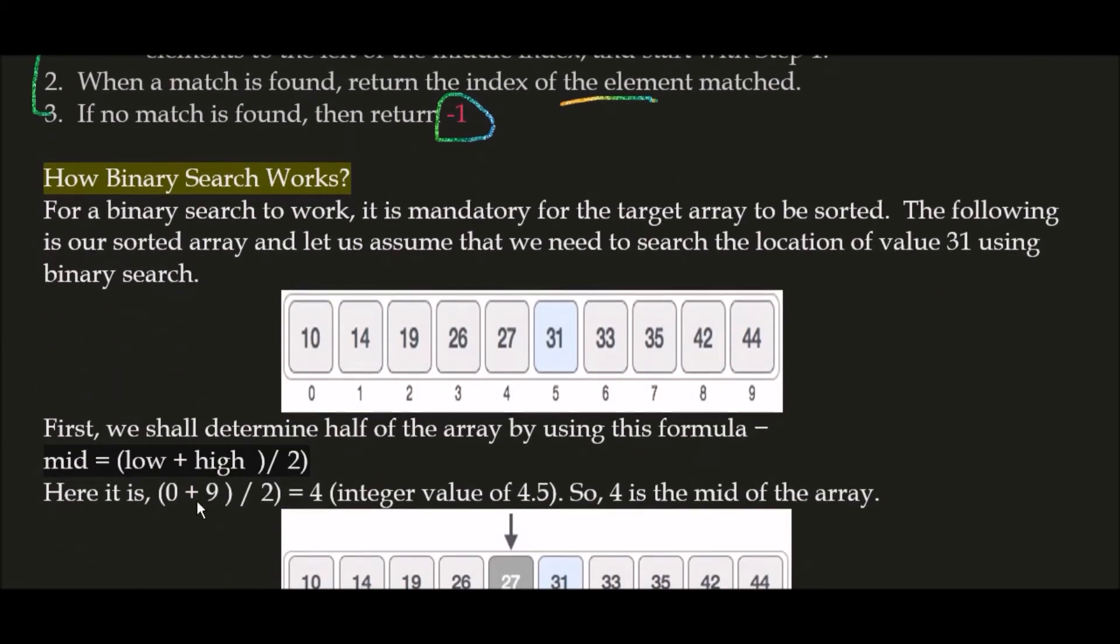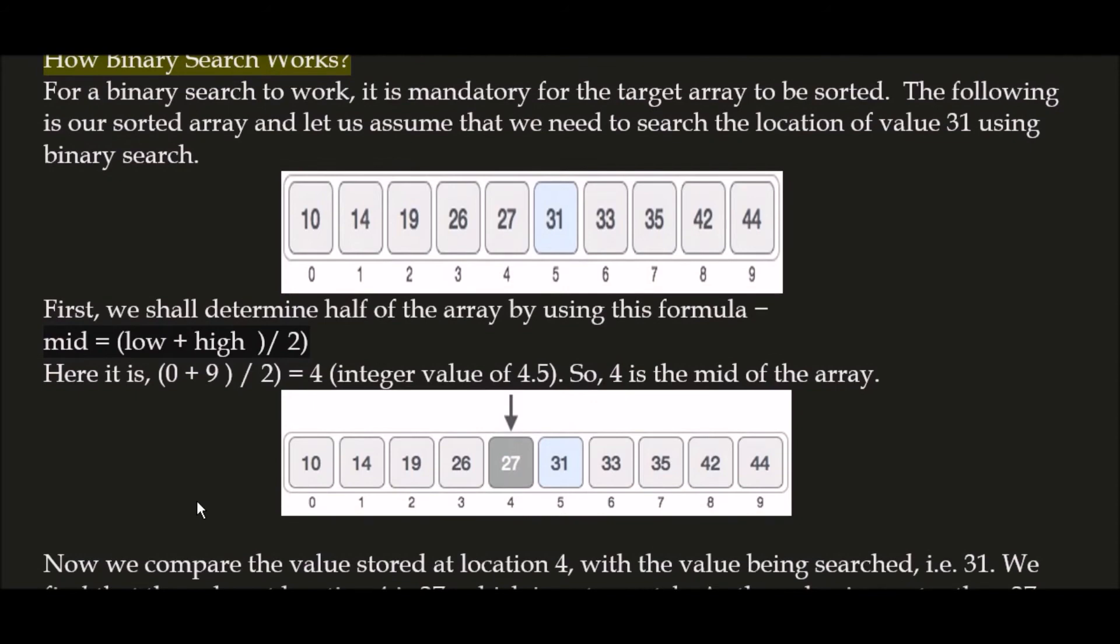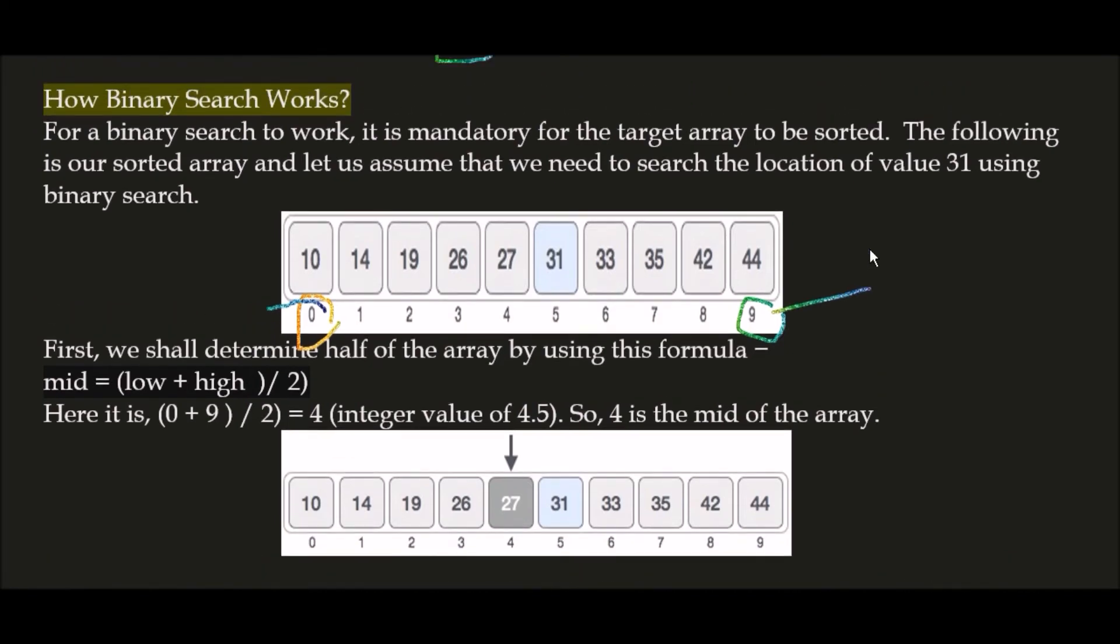Here we are taking an array from index 0 to index 9. Your lower index is 0 and upper index is 9. I told you firstly we check whether the array is sorted or not, so let's check.